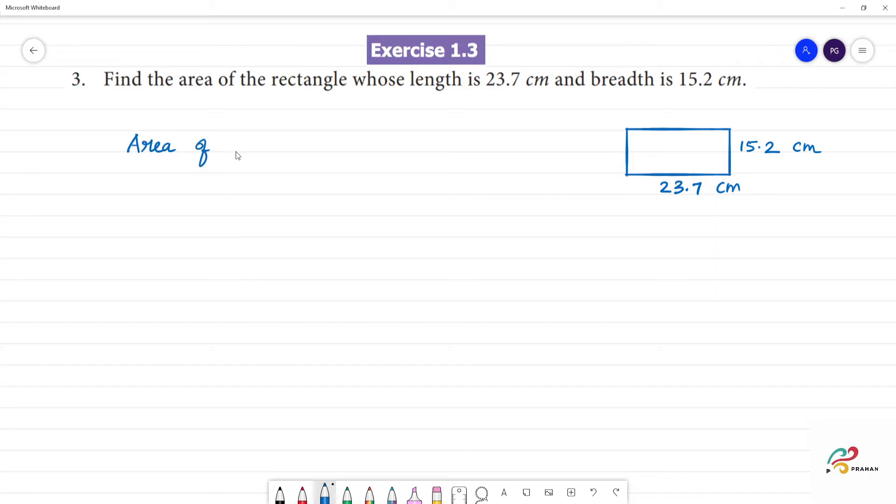We know that area of rectangle equals length times breadth. That is 23.7 cm multiplied by 15.2 cm.